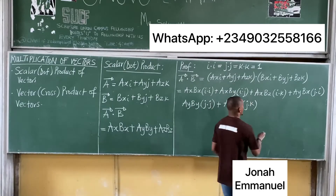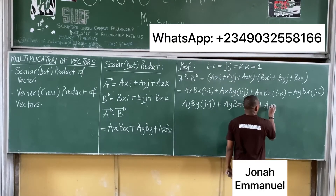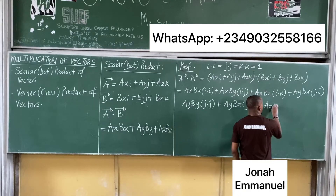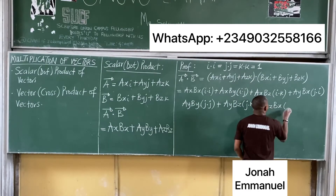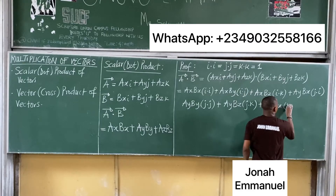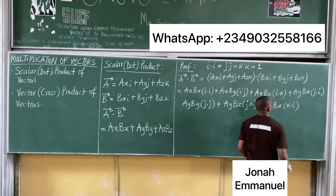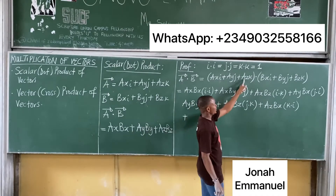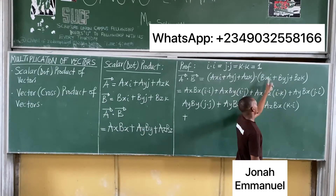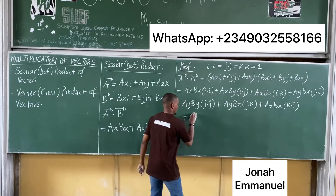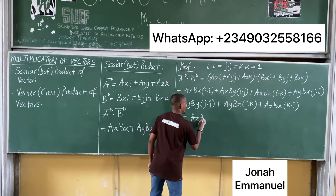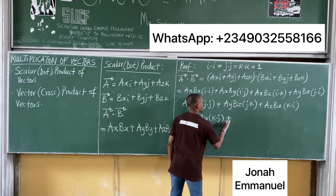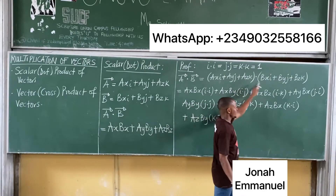Then finally we have plus az·bx times (k·i), plus az·by times (k·j), and finally plus az·bz times (k·k).